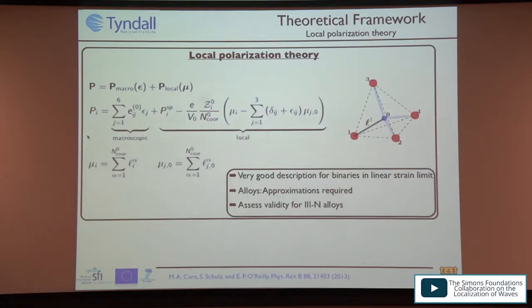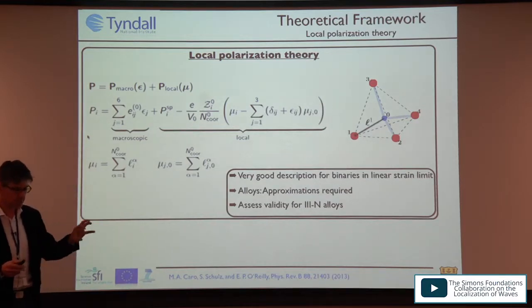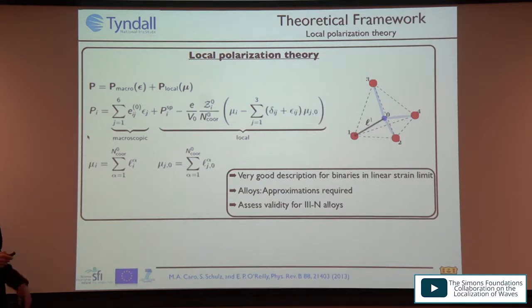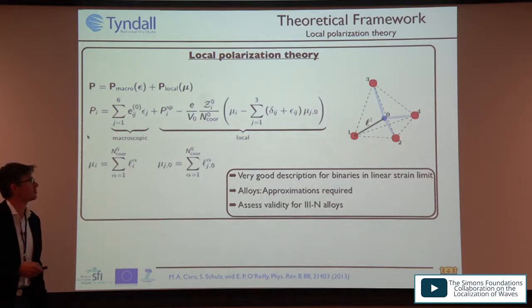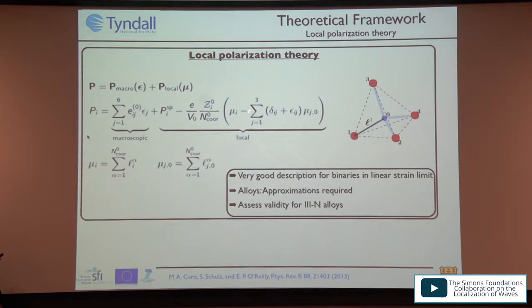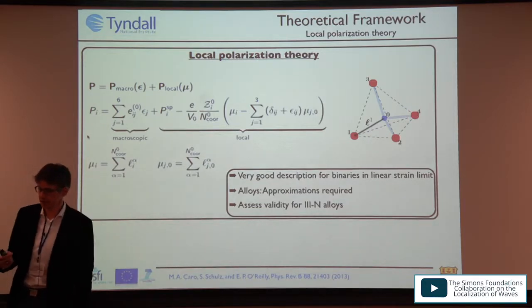What we did was to break up the polarization vector field in a nitride system into a macroscopic contribution and a local contribution. The macroscopic contribution depends on the clamped-ion term — if you distribute atoms randomly in a box without local relaxation, that is the clamped-ion contribution. The local part is related to bond asymmetry parameters: the bond lengths in the equilibrium position and after relaxation of the system, giving a correction to the macroscopic part that is linear in strain and internal strain.